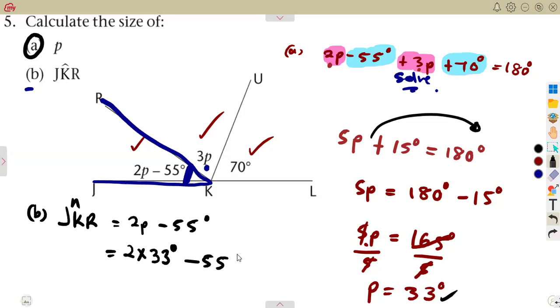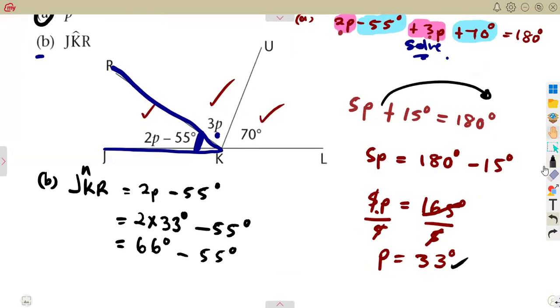Then whatever you obtain, you subtract 55. So that's 2 times 33, which is going to give us 66 degrees, minus 55 degrees. The difference between these two is going to give us 11 degrees. So this angle is going to be equal to 11 degrees.